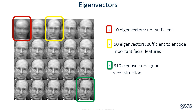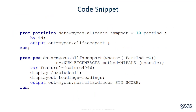Once we choose the best number of eigenfaces, we can use their corresponding weights as a new feature vector which represents the original image in the new eigenface space. When an unlabeled face is provided for recognition, we can project it onto the new space and calculate a new set of weights. In SAS Visual Data Mining and Machine Learning, you can obtain eigenfaces and their weights easily by running PROC PCA.